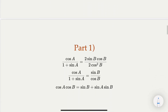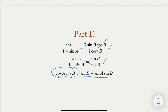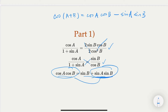After substituting and cancelling common factors, we apply the cosine addition formula: cos(A + B) = cos A cos B - sin A sin B. Rearranging the equation gives us cos A cos B - sin A sin B = sin B, which is exactly cos(A + B) = sin B.